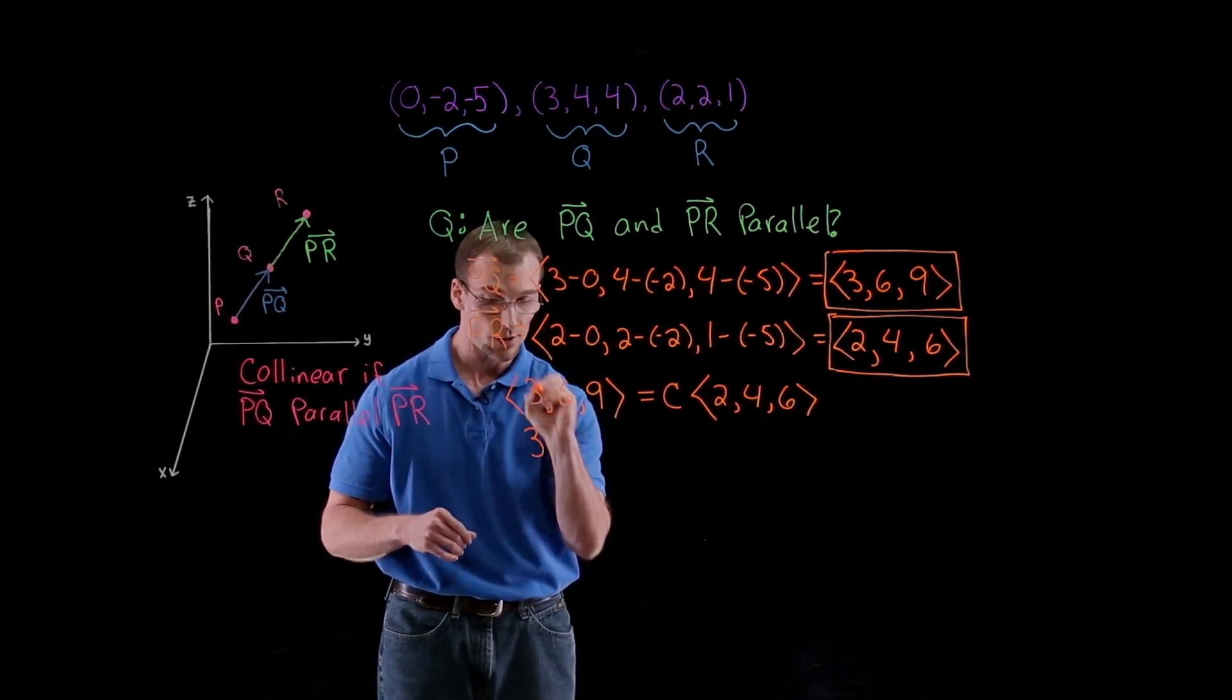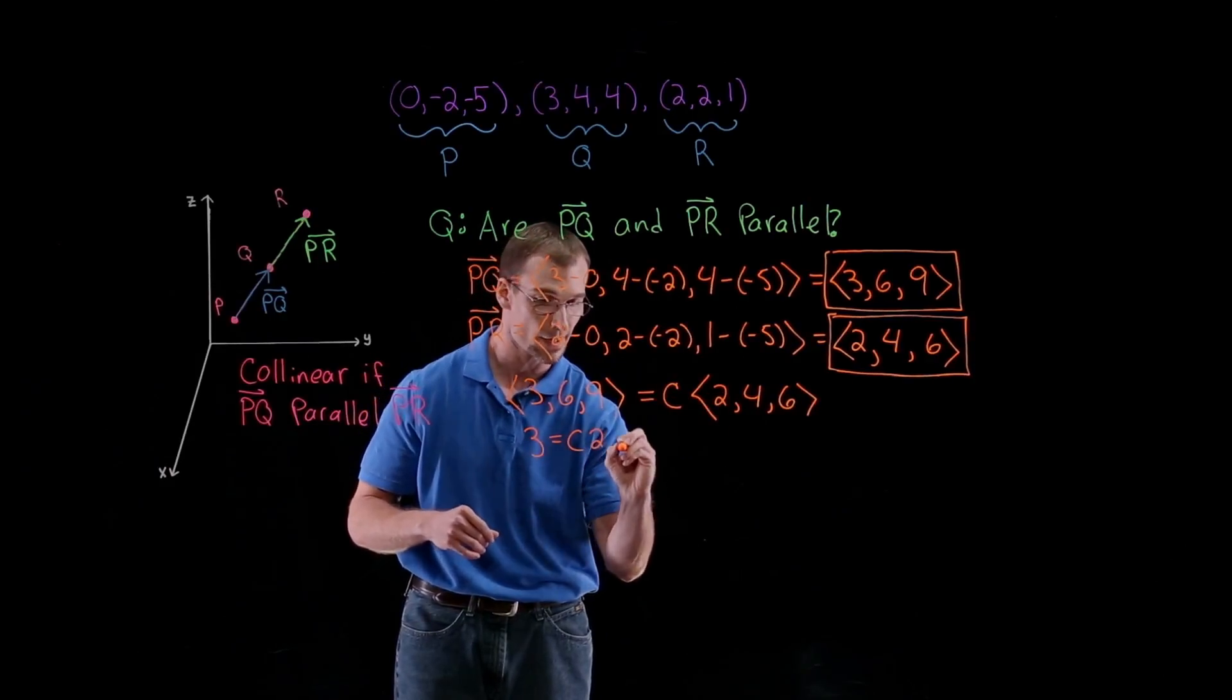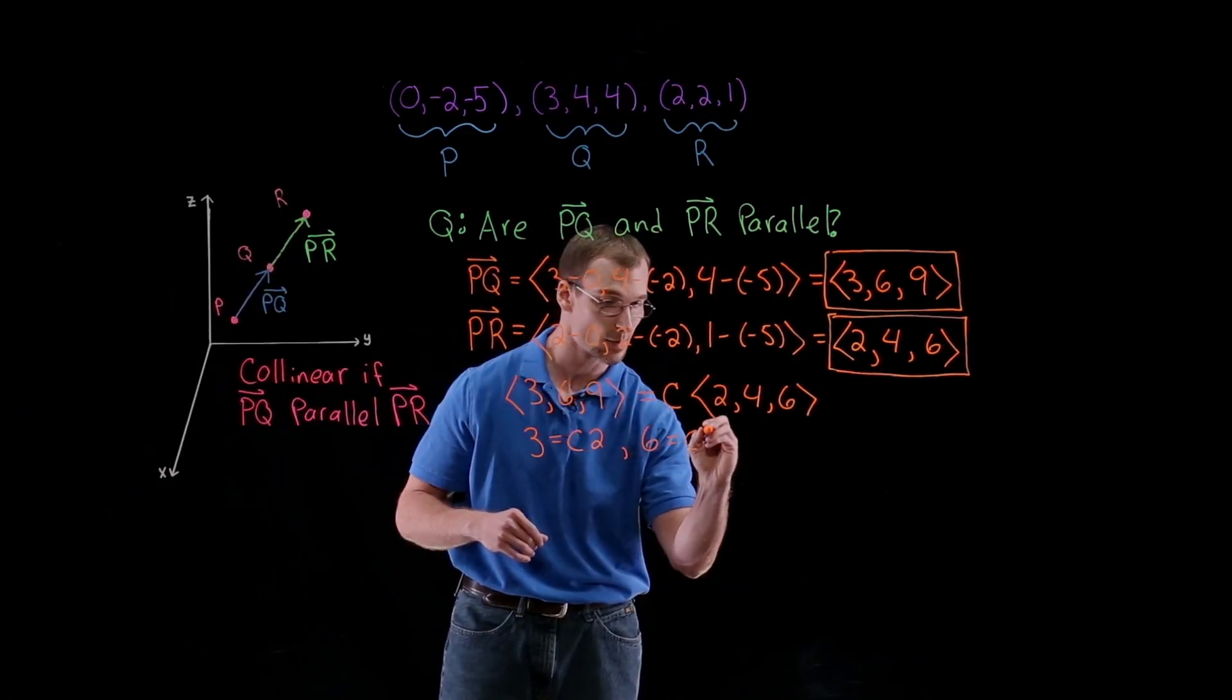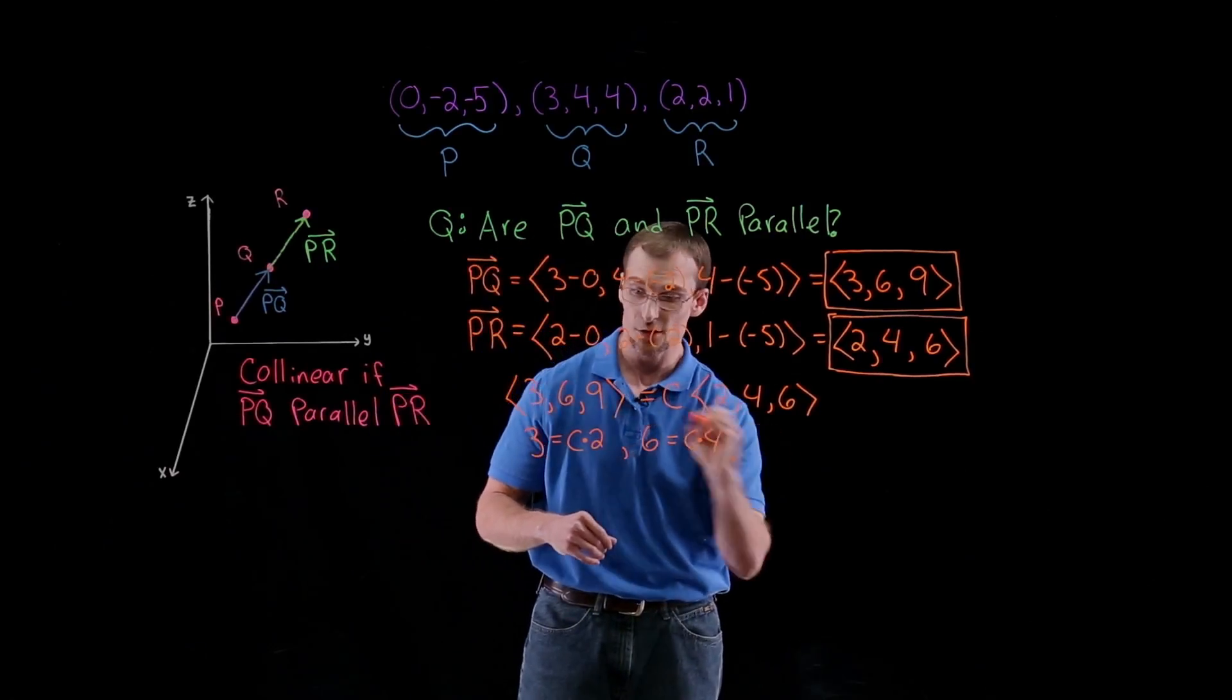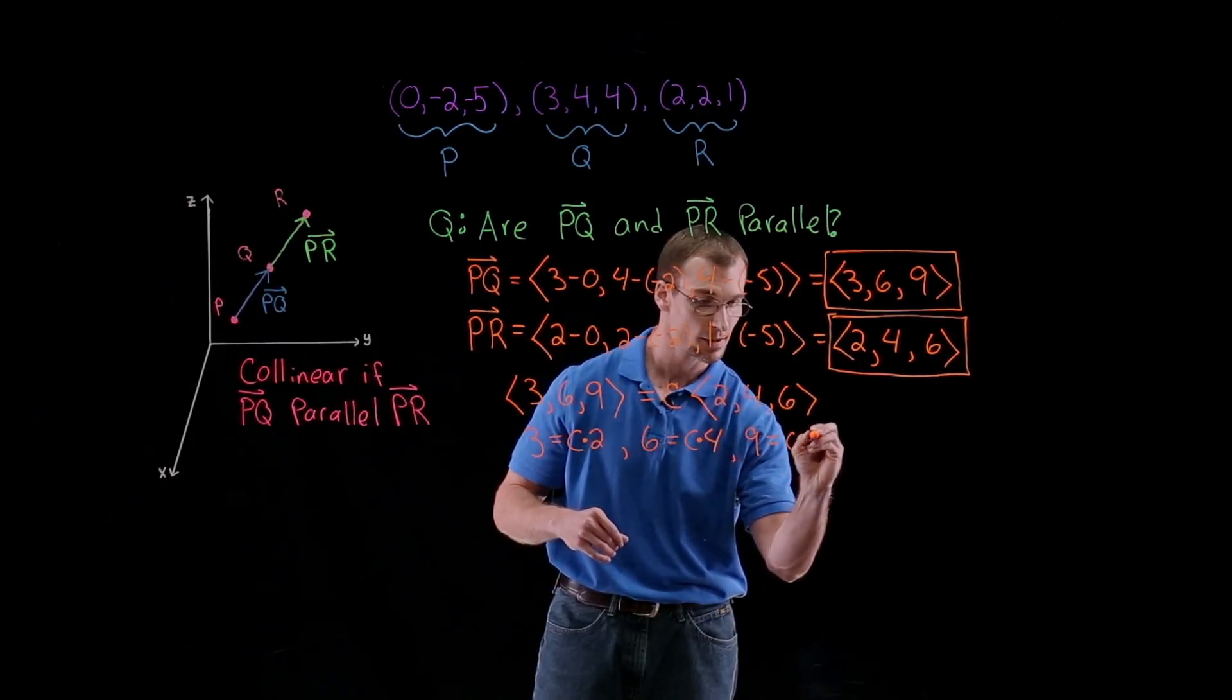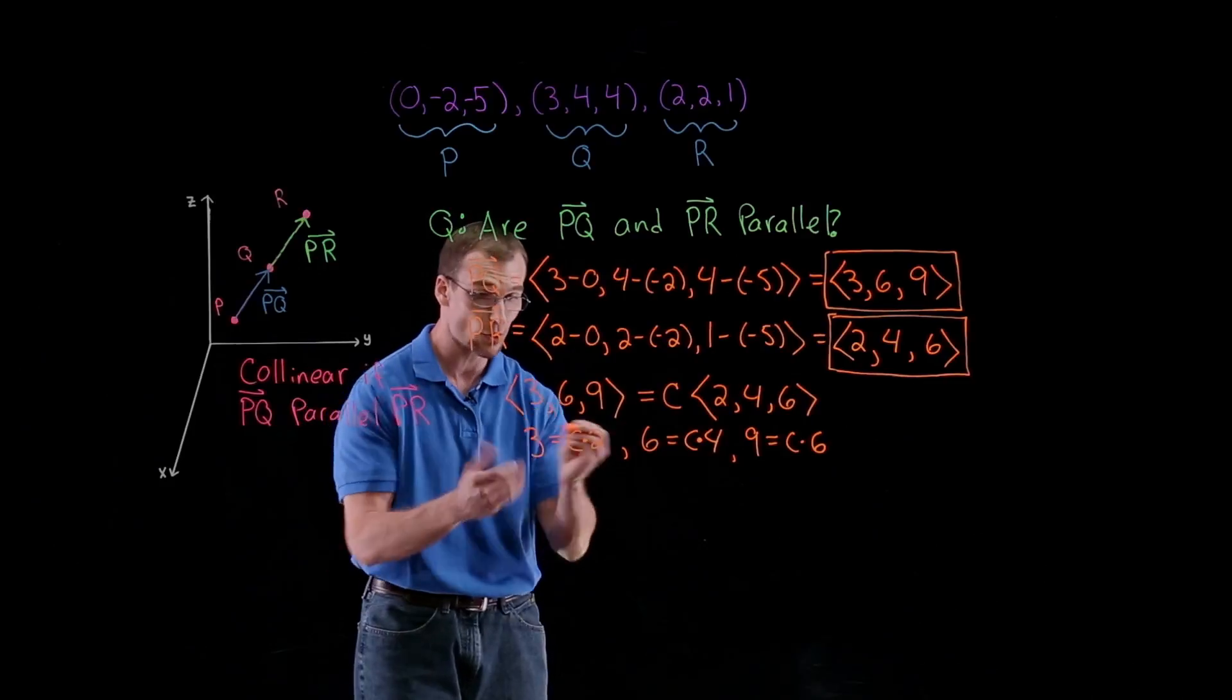So the formulaic way of doing it is we're going to set up each individual equation with the components, meaning that the component 3 has to be equal to C times the component 2. The component 6 has to be equal to C times the component 4. And lastly, the component 9 has to be equal to C times the component 6. And we just solve each equation.